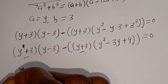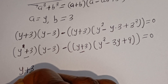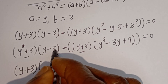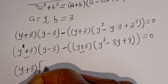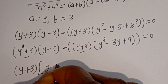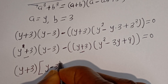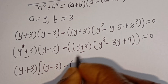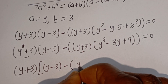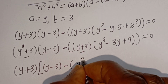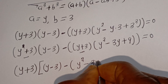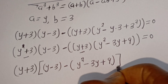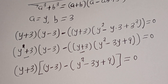Here we have y plus 3, bracket, then if you divide: we have y minus 3, minus, dividing the whole second part gives y squared minus 3y plus 9, equal to 0.